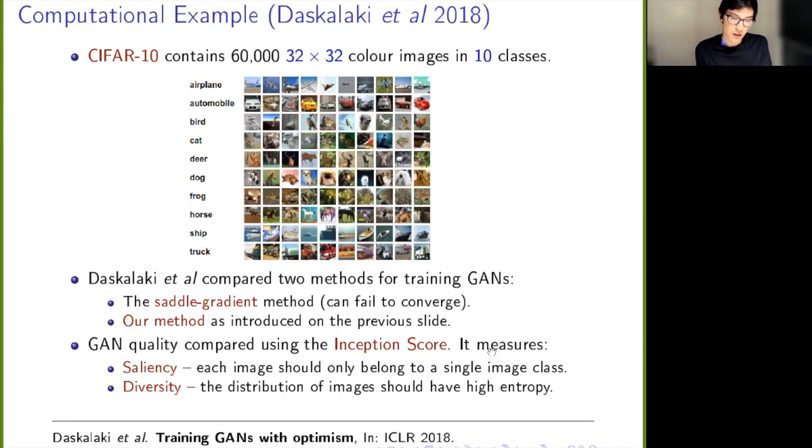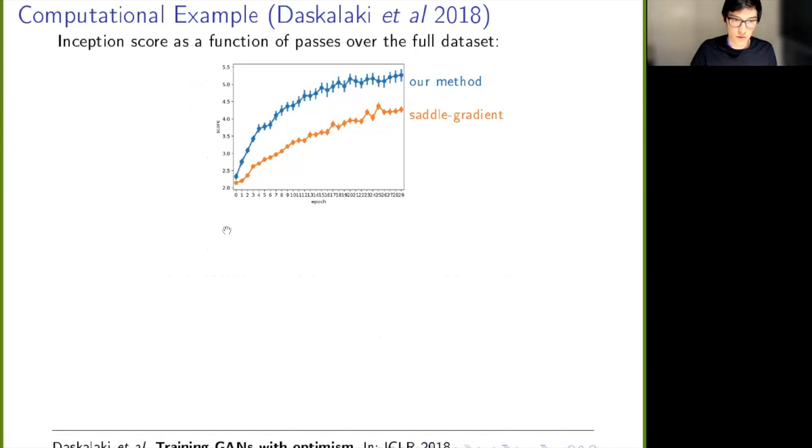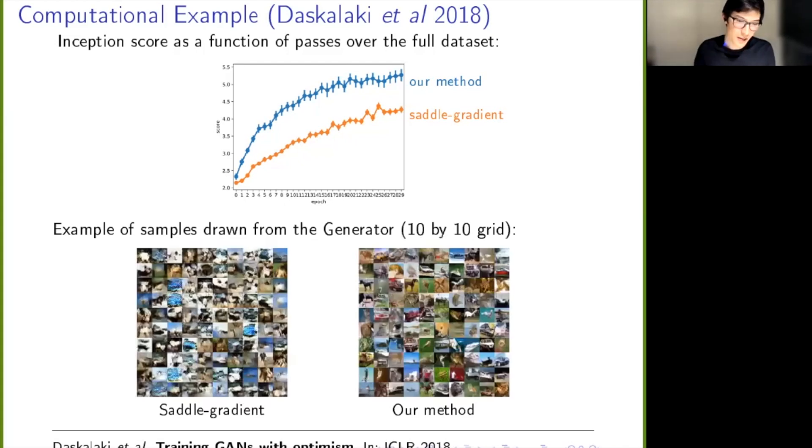We're going to train a GAN to try and generate samples from this dataset here, and then we're going to compare the results of these two methods using something called the inception score. Roughly speaking, what this measures—it's a metric to decide how good a GAN is—it measures two things. The first is that if your GAN generates an image and you look at that image, you should clearly be able to identify that it belongs to just a single class. So you should be able to clearly say that's an airplane and not a dog. That's called saliency. The second thing is diversity, and that just means if I get my GAN to generate a whole heap of different images, it doesn't give me just horses—it gives me a mixture of horses, dogs, frogs, and all the other classes. So what happens? This is the inception score on the vertical axis—higher is better—and across the horizontal axis is to do with number of passes over the full dataset, so it's a measure of how long you've run the algorithm. You can see that the saddle gradient method is not as good as our method there.